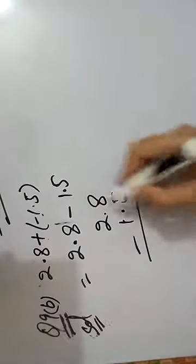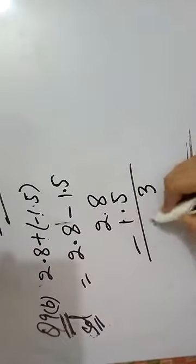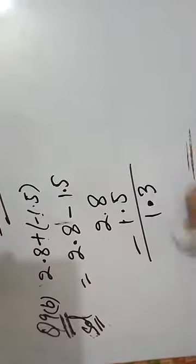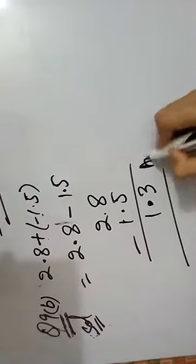8 minus 5 is 3. 2 minus 1 is 1. The answer will be 1.3.